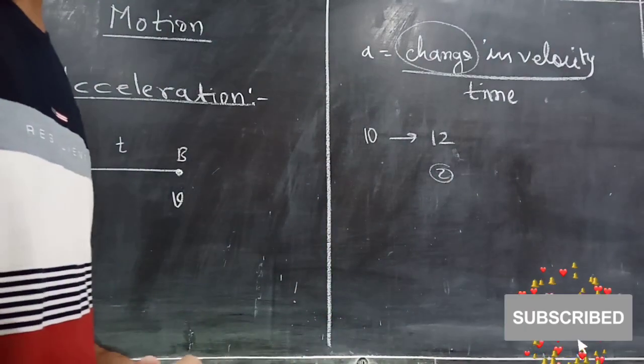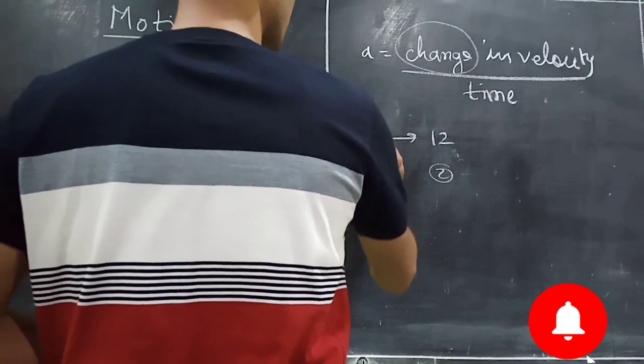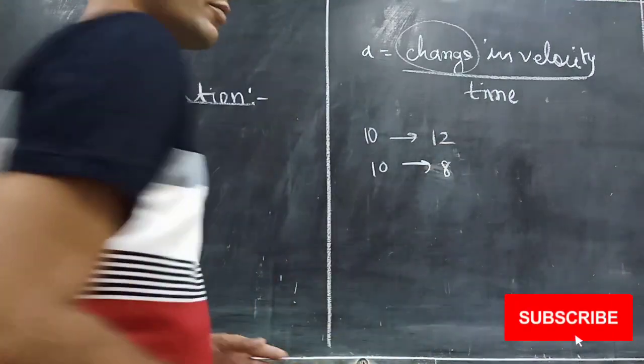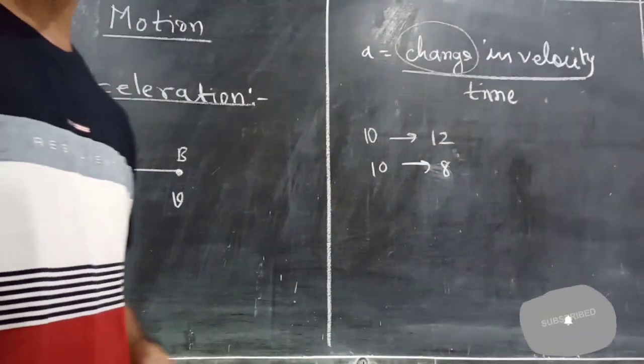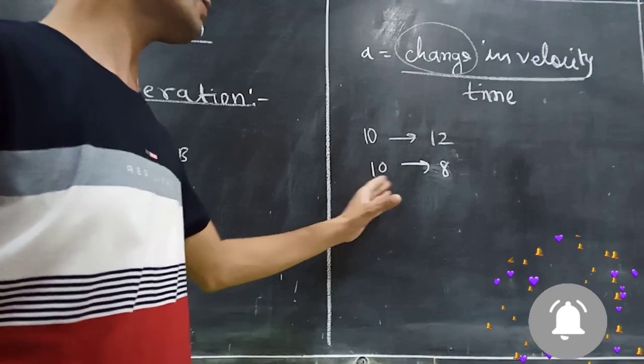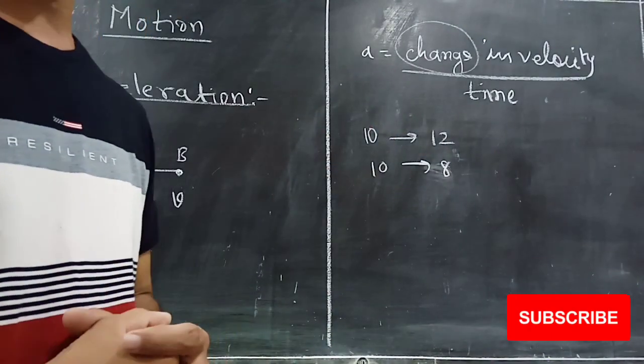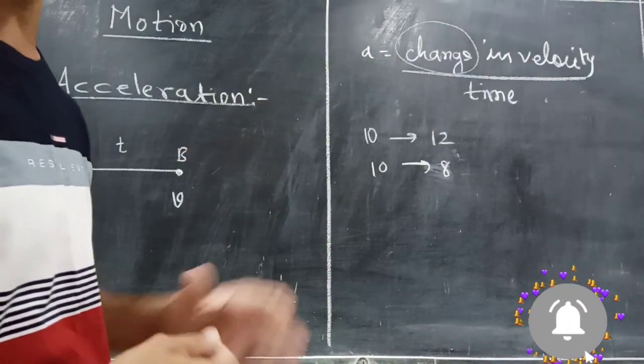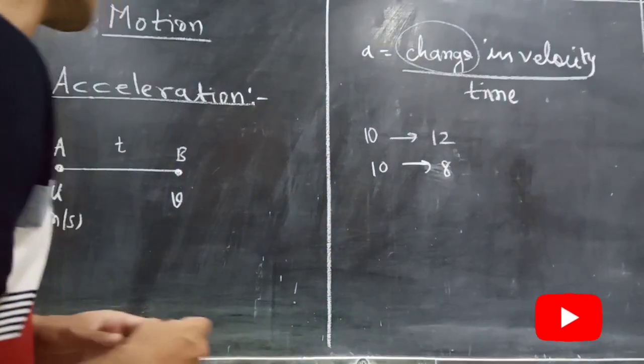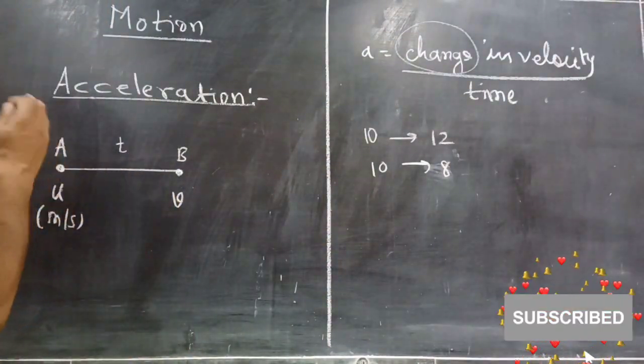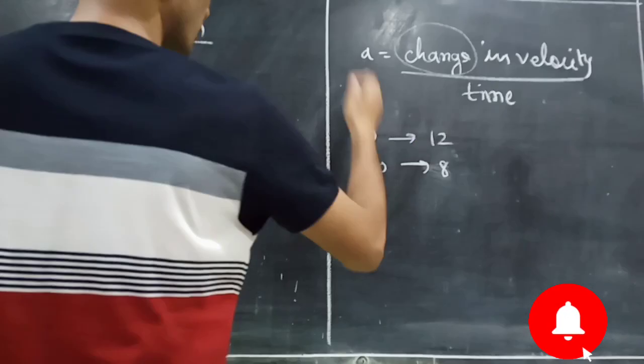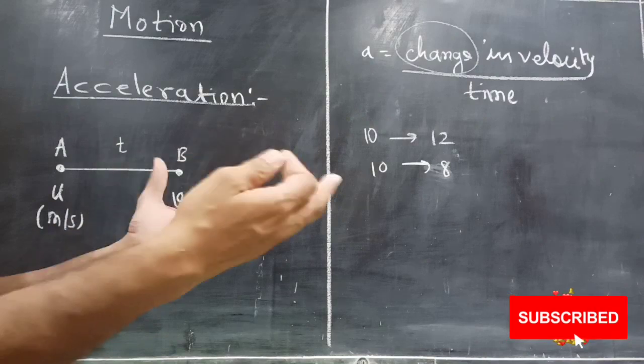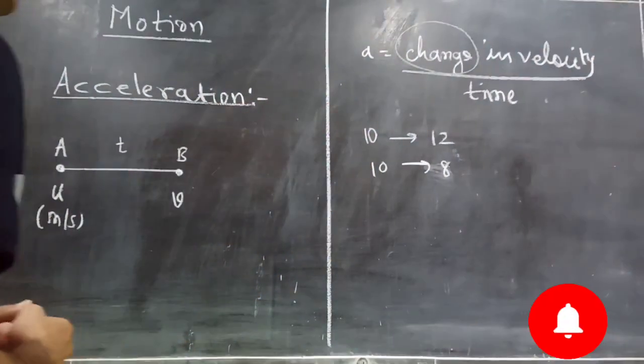Now suppose you sold it for less. You bought it for 10 rupees and you sold it for 8 rupees. What is the profit? When you calculate the change, you will get minus 2 as answer. There should be a loss. In the same way, acceleration may be positive, acceleration may be negative. Now you understand change. Change is nothing but final minus initial. Selling price minus actual price. It can be positive or it can be negative.